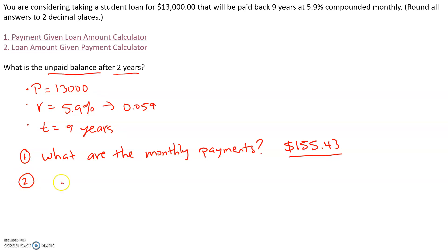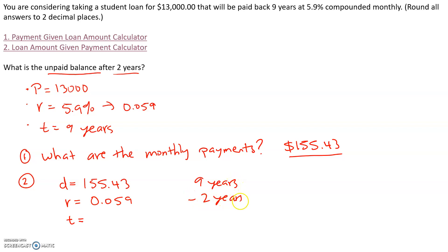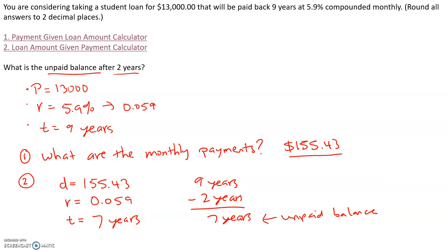In part two, we know that our monthly payment is $155.43. Our interest rate is still 0.059. But for the time, here's where you have to be a little creative. Our original term for the loan was nine years, but you've been making payments for two years — that means we have seven years left of payments. We want to find the unpaid balance for these remaining seven years, so our time T is going to be seven years.